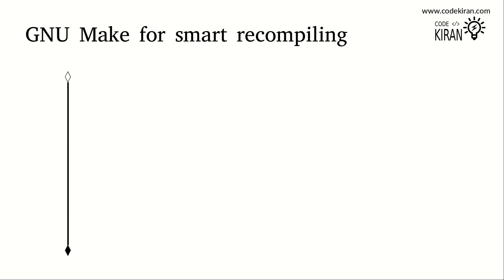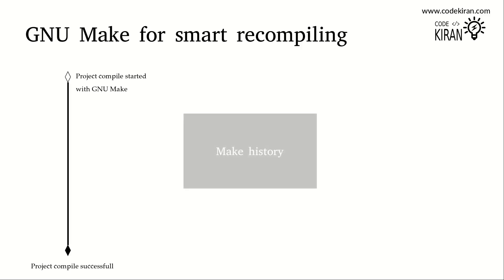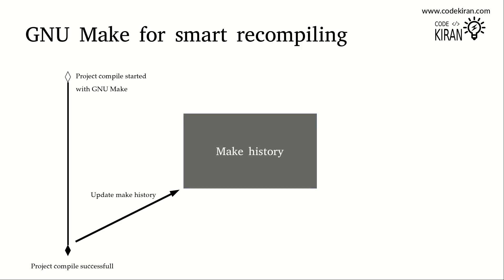If you have a project and you compiled it with GNU make and generated a final software product, the make tool will take all the timestamps of the final outputs and keep them in a single place. I'm calling this 'make history' — this is my own assumption and not a generic name provided by GNU make. Make history contains all the timestamps of your final software product.